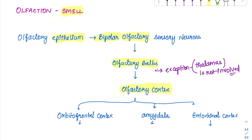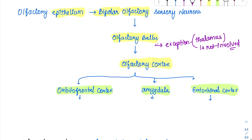Finally, olfaction reaches three different places: the orbitofrontal cortex, the amygdala, and the entorhinal cortex. All three have different functions with respect to olfaction. The orbitofrontal cortex is responsible for conscious discrimination — we are able to differentiate between a rose and a foul-smelling gutter. This differentiation happens in the orbitofrontal cortex.